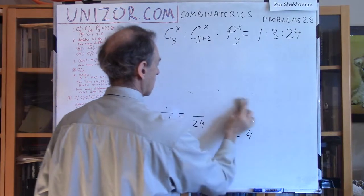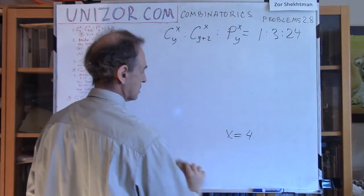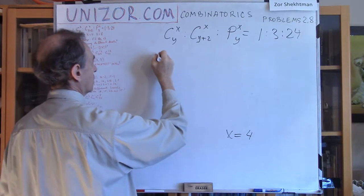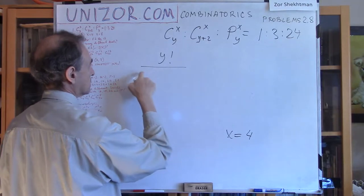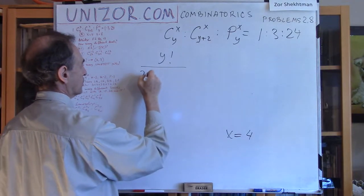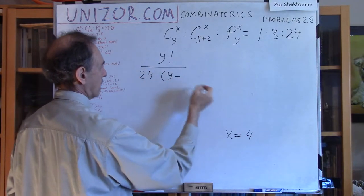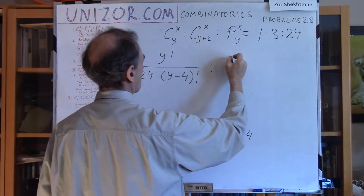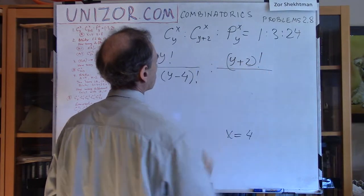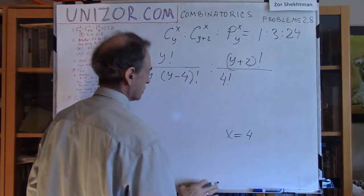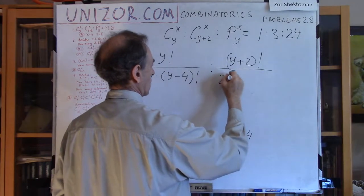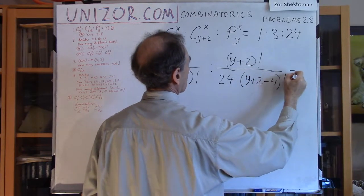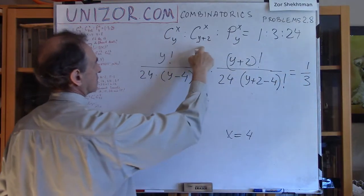That's very easy, and we've already solved for x. Now, knowing x, we can take any other proportion and use it — let's say this one to this one. So y factorial divided by, instead of x factorial, I put 4 factorial which is 24, times y minus x which is 4, factorial. Proportion to this one, which is y plus 2 factorial over x factorial which is 4 factorial which is 24, times y plus 2 minus 4 factorial, equals 1 third.